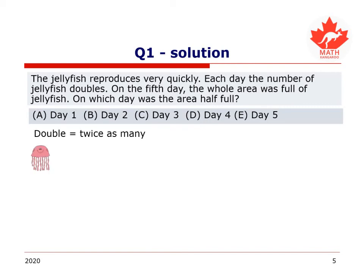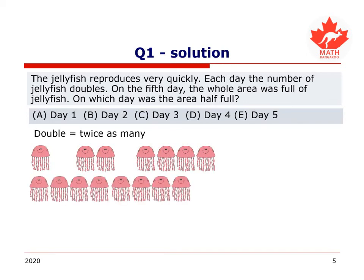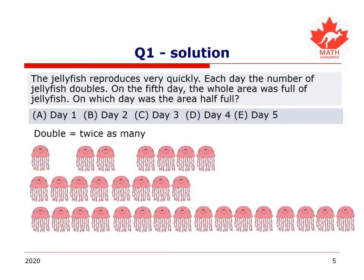So if I start off with one jellyfish, on day two, I will have two jellyfish after it doubled. Then on day three, after it doubled again, I will have two plus two, four jellyfish. Twice as many as the day before. Then another doubling will happen on day four. Four plus four, eight jellyfish. Another doubling will happen the next day. On day five, eight plus eight, 16 jellyfish all in all.